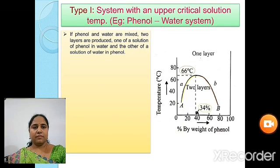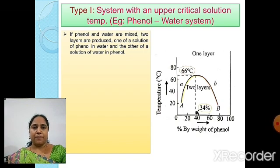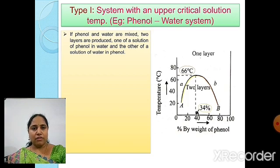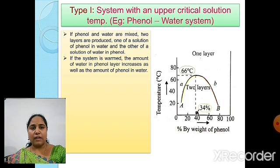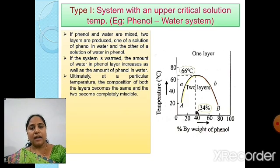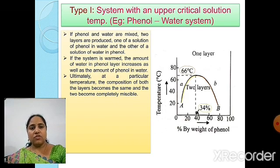Type 1: system with an upper critical solution temperature — example, phenol-water system. If phenol and water are mixed, two layers are produced: one is a solution of phenol in water, and the other is a solution of water in phenol. If the system is warmed, the amount of water in the phenol layer increases as well as the amount of phenol in water, until ultimately at a particular temperature the composition of both layers becomes the same.